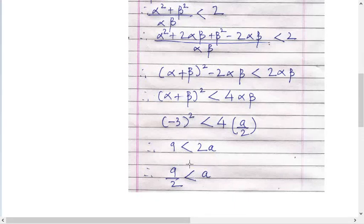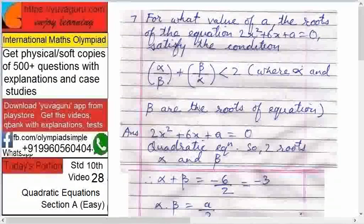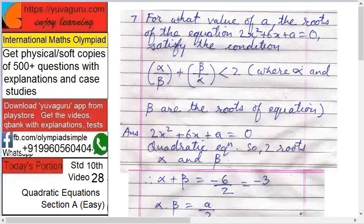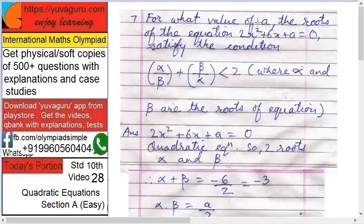Bring this two on the other side, therefore a is greater than nine upon two. That is the required answer. What is the question? For what value of a the roots satisfy this condition.